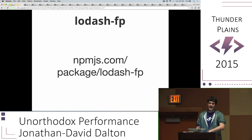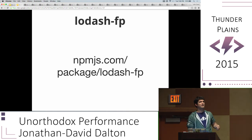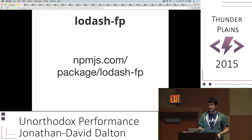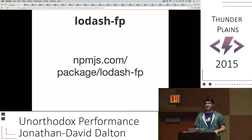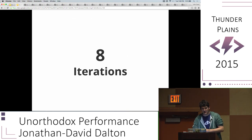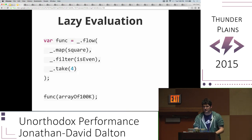Shout out to Lodash FP — there's a package at npmjs.com called `lodash-fp`. In version 4 that's actually going to be in the primary Lodash package. You can just require it. The argument order is flipped: data last, iteratee first. If you're into functional programming, this will have you covered, with all the optimizations applied. So you get classic Lodash performance with all the functional programming goodies. And that composed function still results in only eight iterations even though you're composing functions and not writing a lazy sequence explicitly — because of the awesome source code.